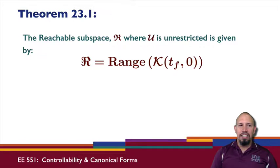Now, in the text, theorem 23.1 says the reachable subspace r, where u is unrestricted, is given by this. r is the range of the Gramian from 0 to tf. In proving this, this is actually proved for the discrete time system, but it could also be applied to the continuous time system. Here, u is unrestricted. That is, we're not bounding its magnitude, we're not bounding its energy. The reachable set at up to time tf is given by the controllability Gramian up to time tf.